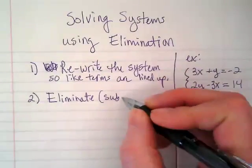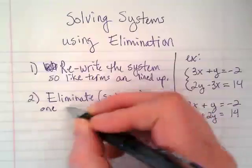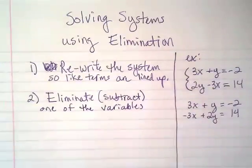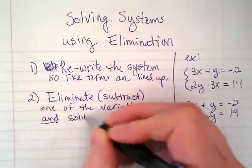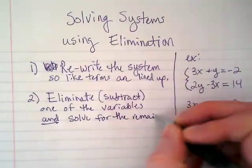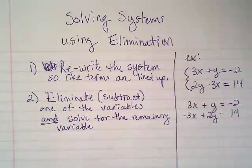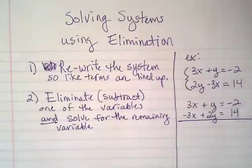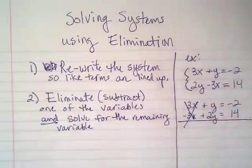Our second step is going to eliminate, which really means subtract, one of the variables. And this is a two-part step, solve for the remaining variable. So let's do that step. We're basically going to combine these two equations to solve for the y, because the 3x and the negative 3x are going to cancel out.